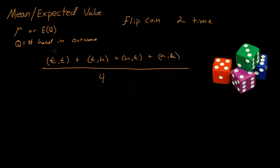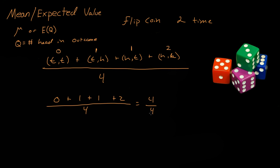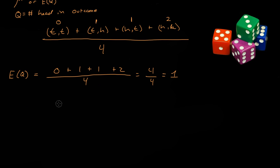Let's say Q is equal to the number of heads in each outcome. Tails-tails gives zero heads; tails-heads gives one head; heads-tails gives one head; and heads-heads gives two heads. So we have zero plus one plus one plus two, all over four — that's four over four, which equals one. The expected value of Q is one, meaning if you flip a coin two times, you'd expect heads to come up one time.